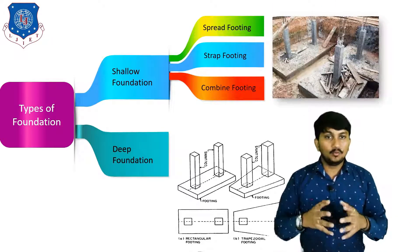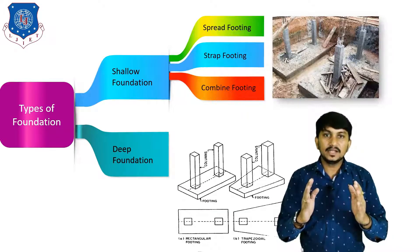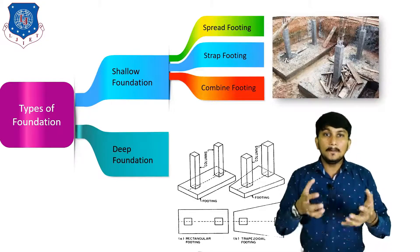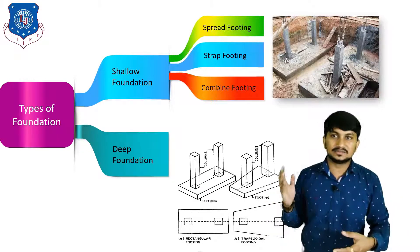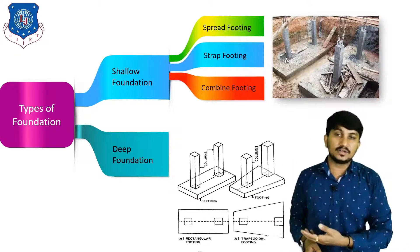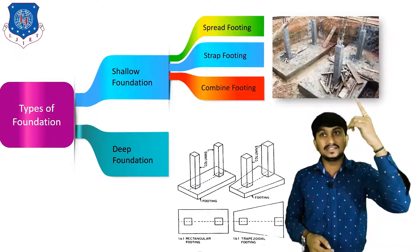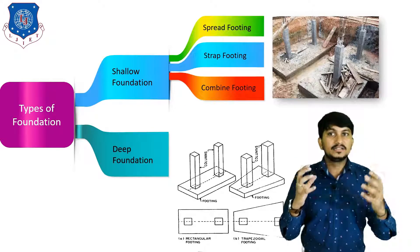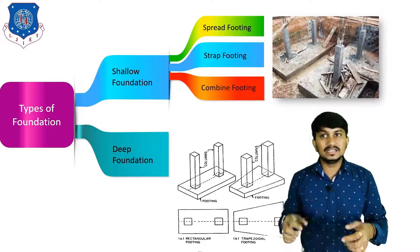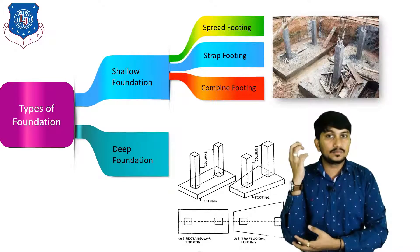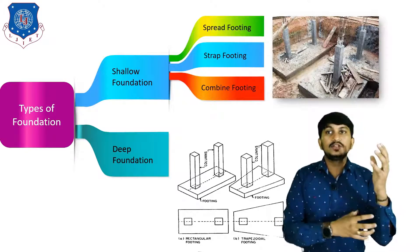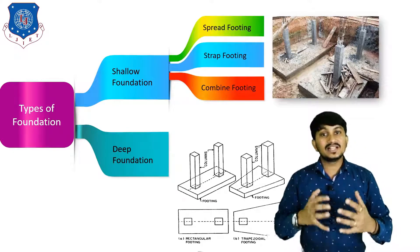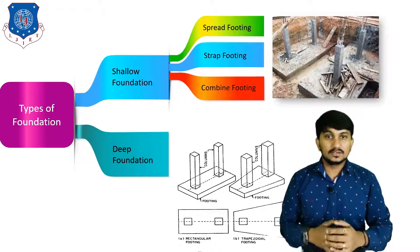The third type is combined footing, used where two columns are close to each other and if individual footings are made, they would overlap. In this condition, we combine the footings of the two columns. There are two types: rectangular combined footing and trapezoidal combined footing. If the load on one column is comparatively less than the other, the cross-sectional area required is less, so a trapezoidal footing is used to reduce overall concrete construction.